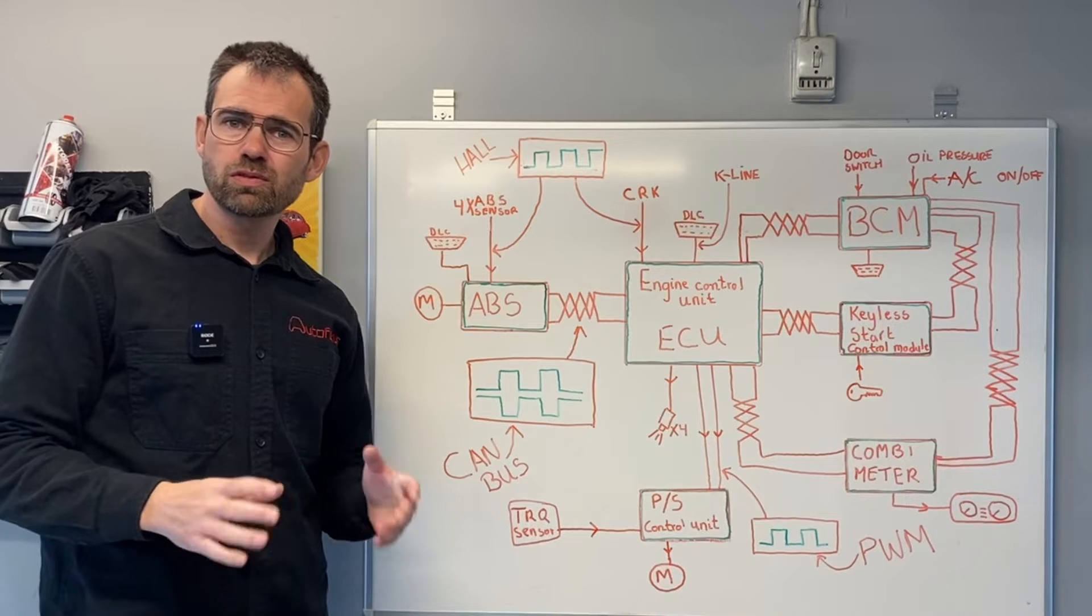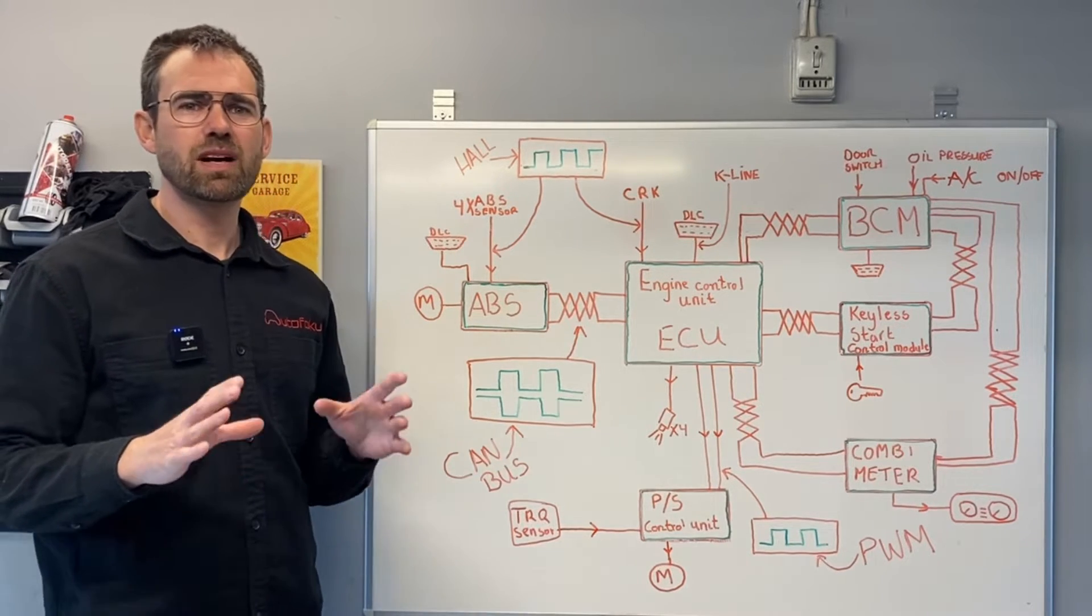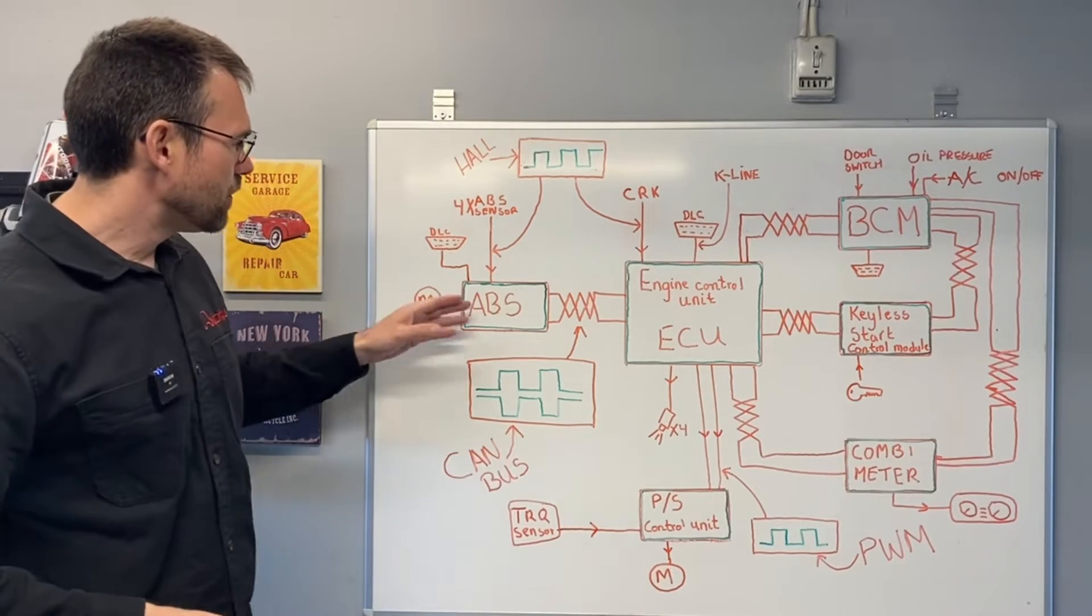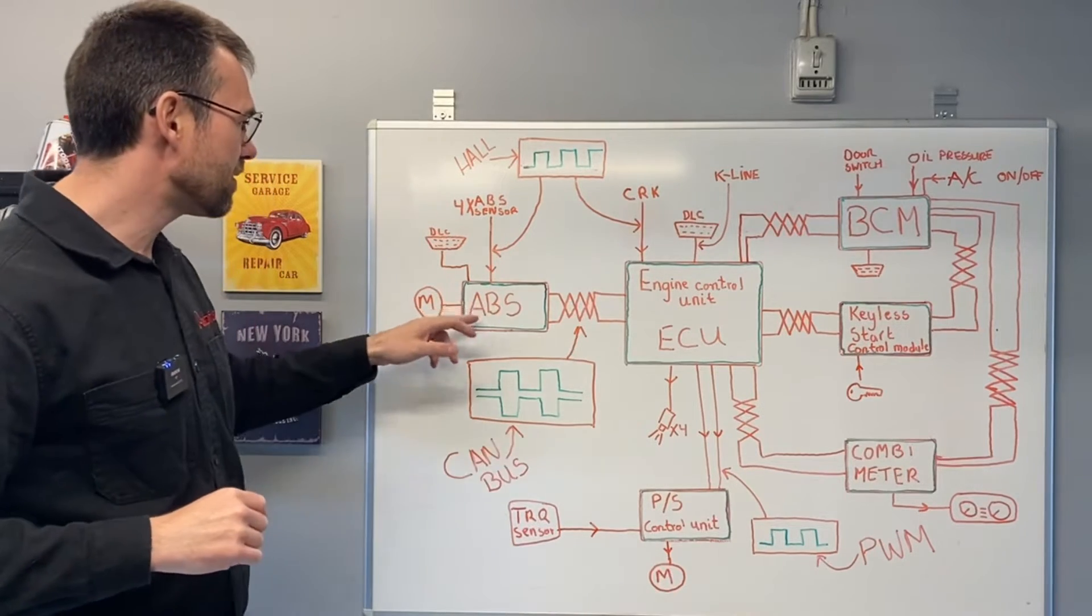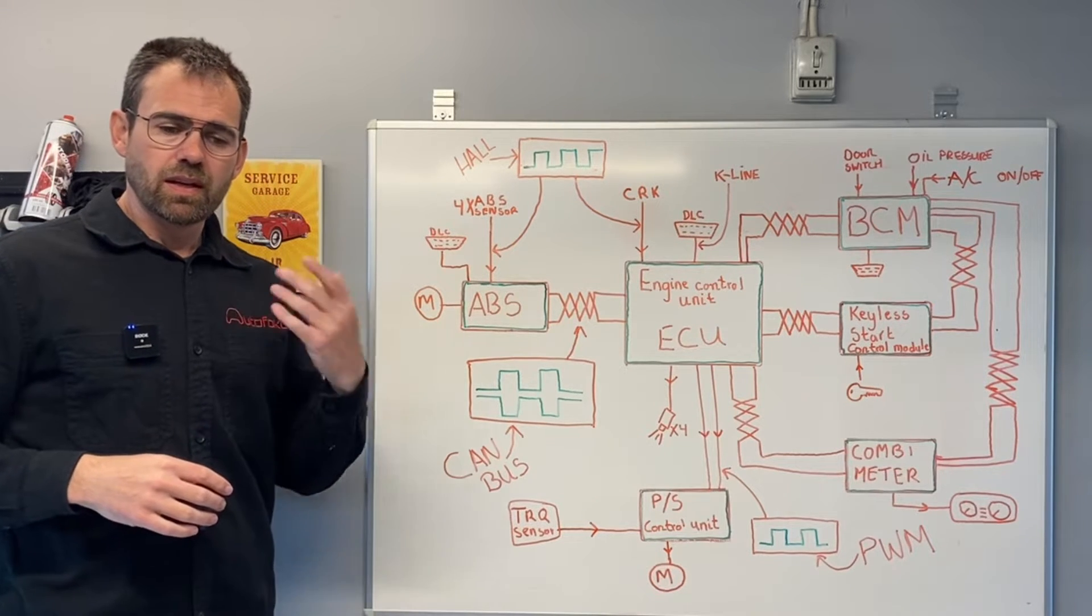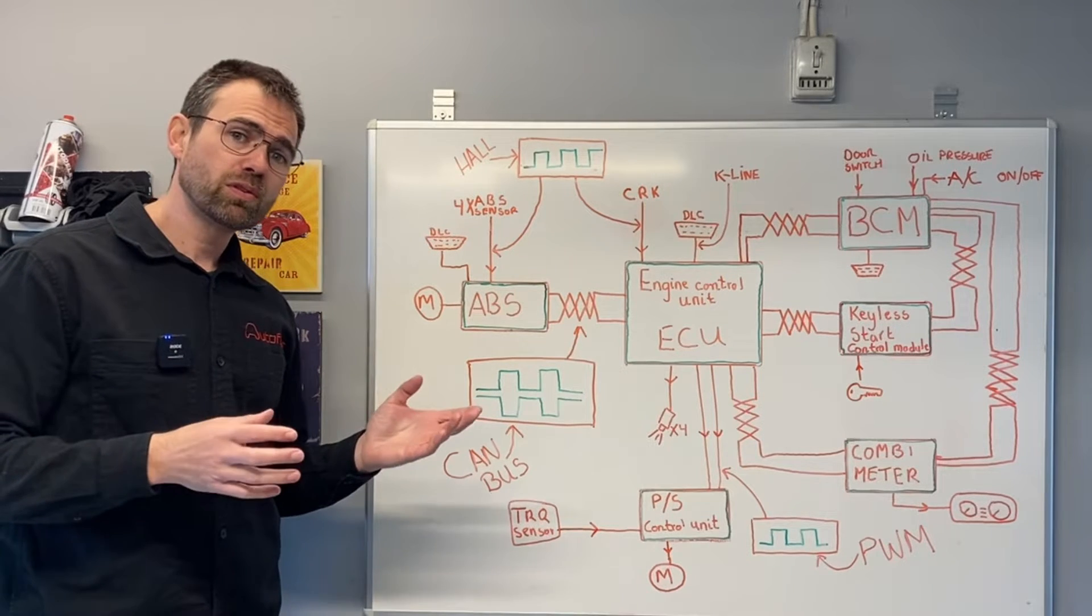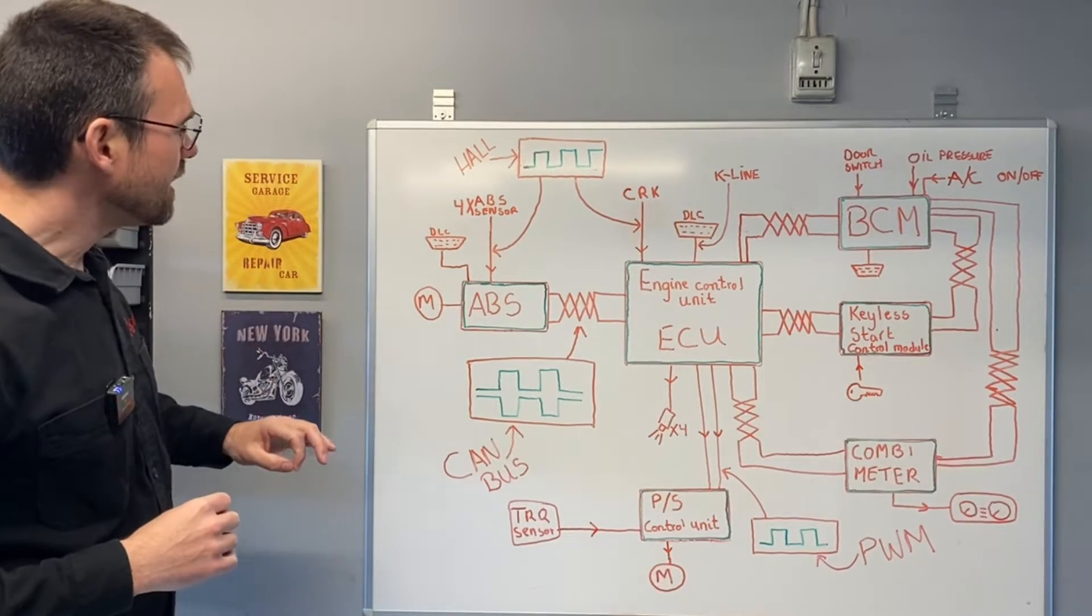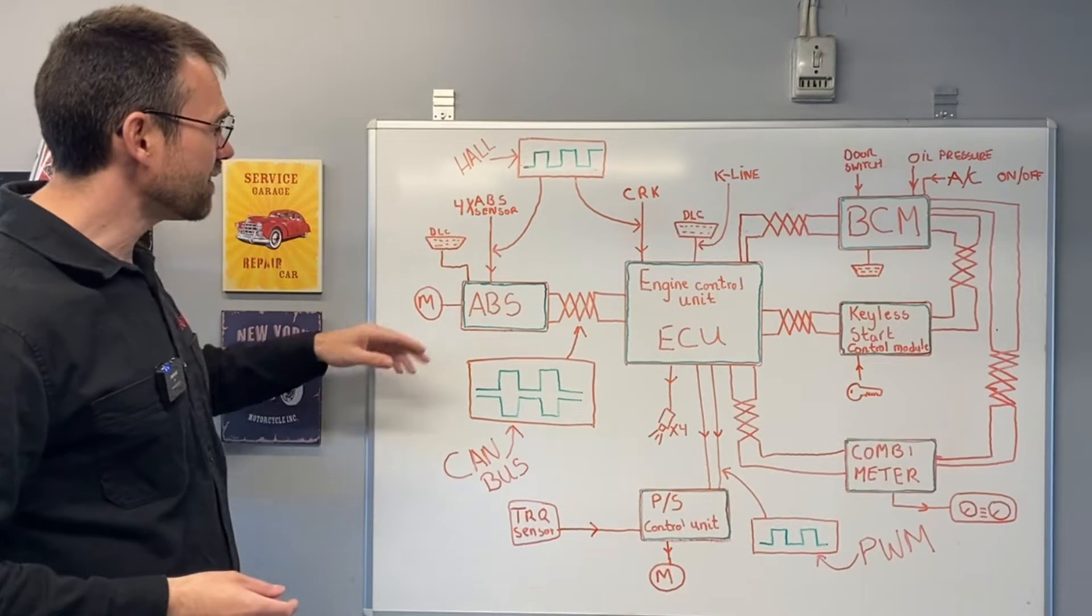Now you've seen what each control module looks like. Let's take it a little deeper to get a good understanding of how the electrical architecture actually works. Each control module has one main purpose. Let's take the ABS control module. Its main purpose is to initiate the ABS brakes whenever needed and it also controls ESP.